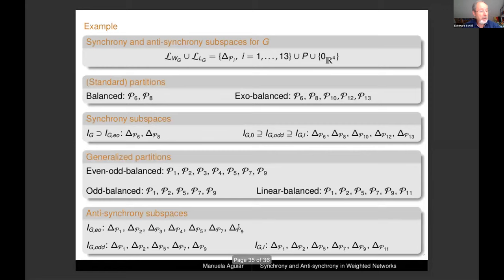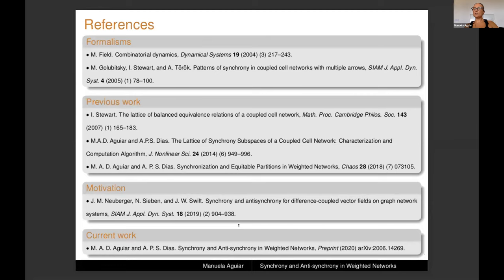This work builds on the formalism of Golubitsky, Stewart, and Török, and related work in the field. The part of the example showing how to obtain the lattice was developed in previous work. We generalize that prior work — which was not for weighted networks — to the setting of weighted networks. The motivation also comes from work considering different coupled vector fields, which we generalize here to weighted networks. Thank you.